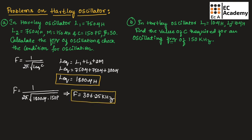Now we need to check the condition for oscillation. The condition for oscillation is that gain should be greater than (L1 + M) / (L2 + M). This formula is used when mutual inductance is given.